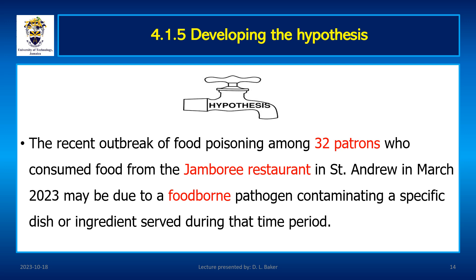Let's create a scenario to structure our hypothesis. A sudden onset of food poisoning symptoms and clustering of cases around the Jamboree community restaurant resulted in 32 cases of food poisoning in March 2023, suggesting a common source of contamination at the Jamboree restaurant. The investigation will focus on identifying the specific food item or ingredient, potential cross-contamination points, and lapses in food handling practices within the restaurant during that period. Exploring hygiene practices of staff and the supply chain of ingredients can provide crucial insight into the origin of the food pathogens responsible for the outbreak.